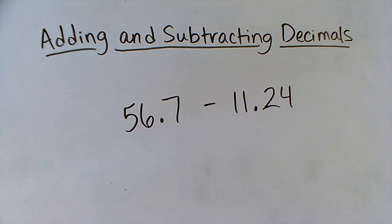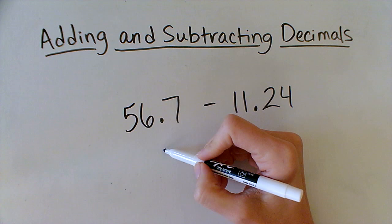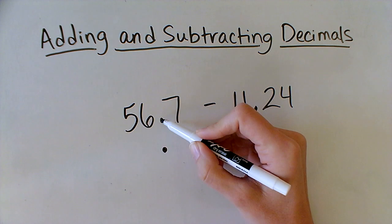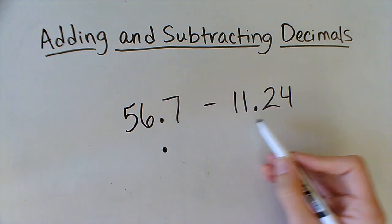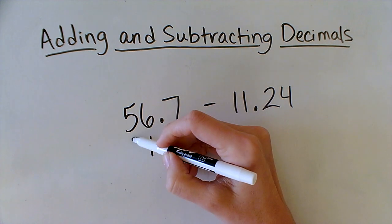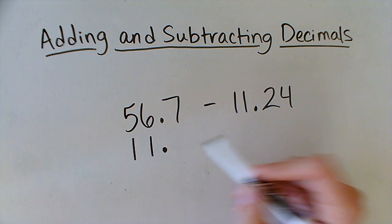When I rewrite this problem vertically, I need to make sure that the decimals stay lined up. So I'm actually just going to start by writing a decimal right underneath the decimal in 56.7. And then I'm going to fill in the rest of my number. So my number had 11 before the decimal and 24 after.